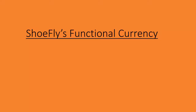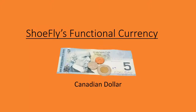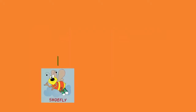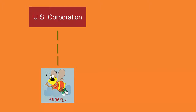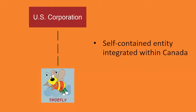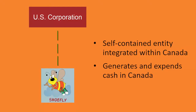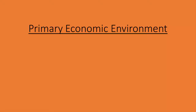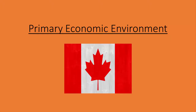Based on the facts, ShoeFly's functional currency would be the Canadian dollar, its local currency. In principle, Topic 830 indicates that the functional currency is a matter of fact. And in our example, the facts are pretty straightforward. Although ShoeFly is a subsidiary of a U.S. corporation, it is a self-contained entity integrated within Canada. It generates and expends cash in Canada. As such, the primary economic environment of ShoeFly is Canada. And the functional currency is defined as the currency in the primary economic environment of the entity.